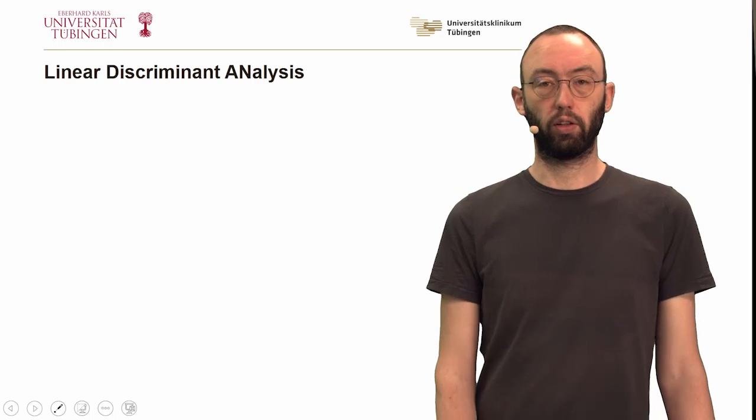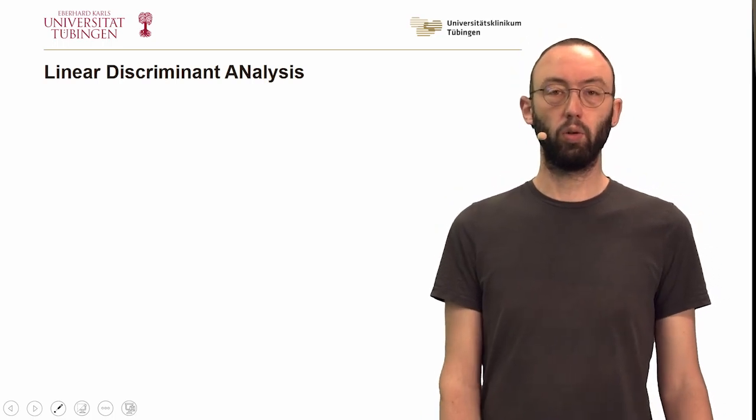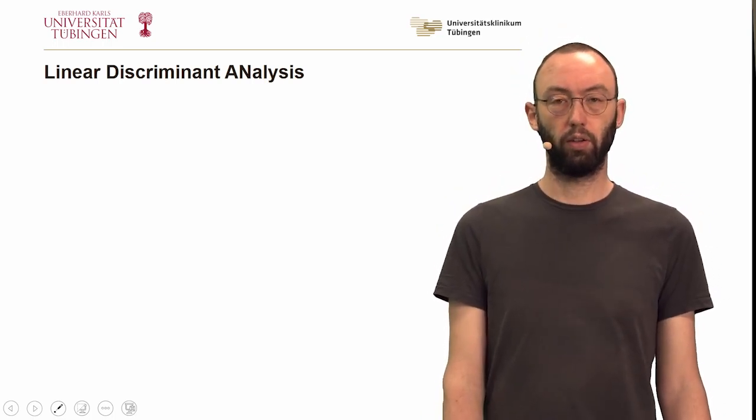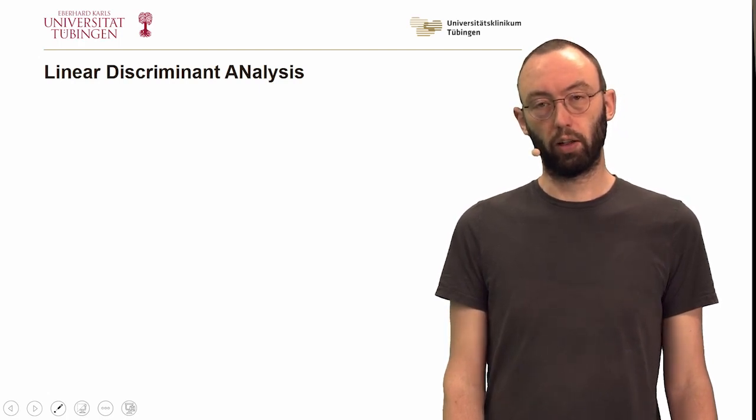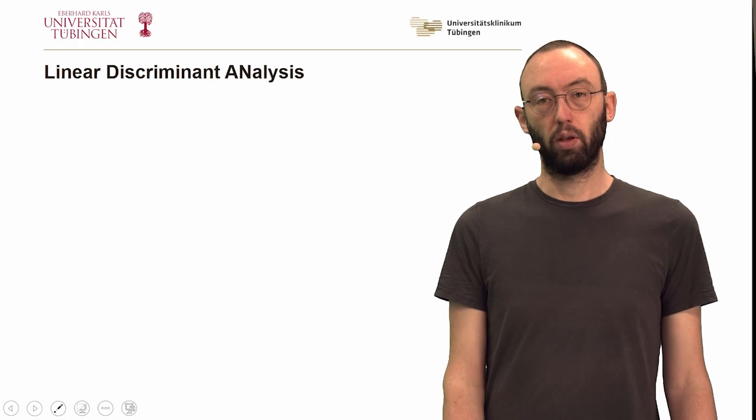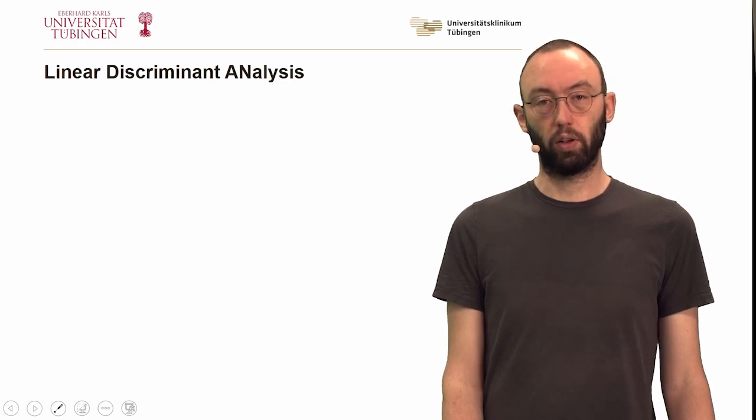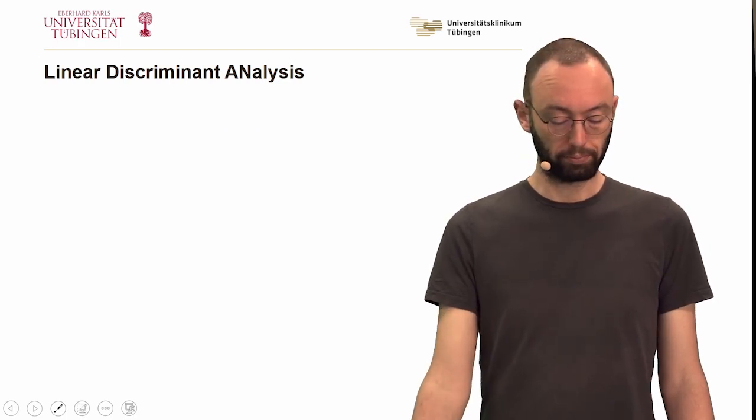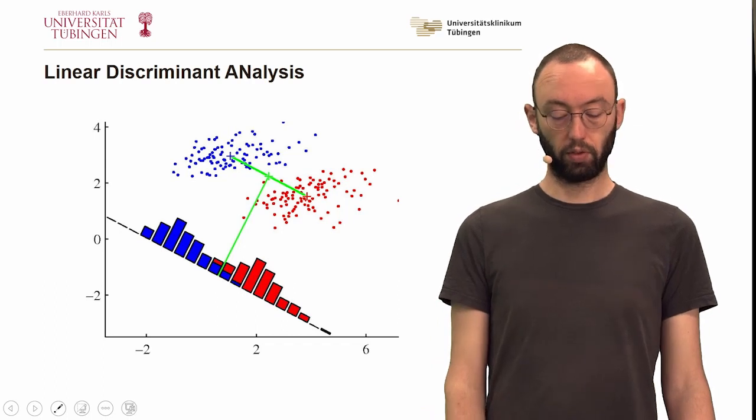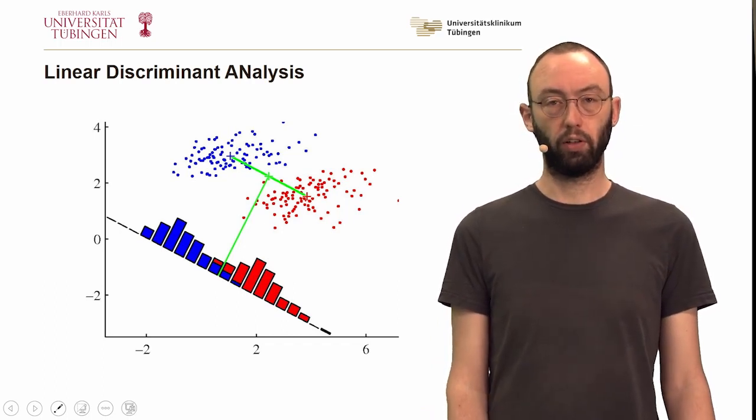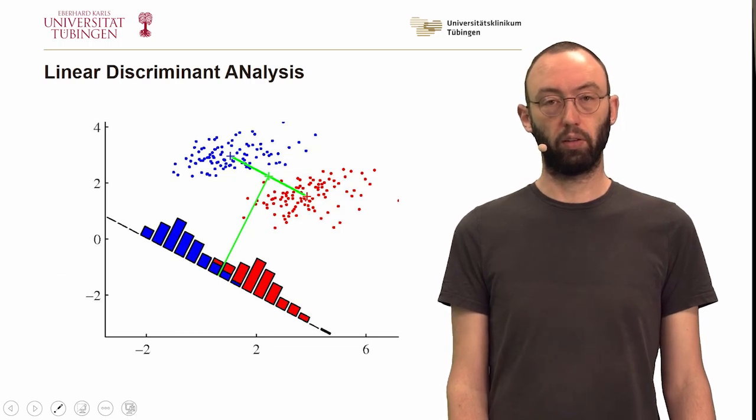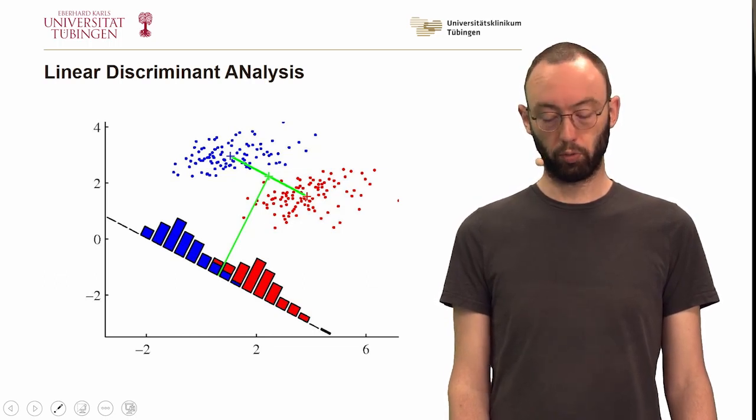We will use a technique called linear discriminant analysis. I will go over the details of this very fast, but if you need a refresher, you can watch our Machine Learning 1 lecture from the winter term, which I will link to this video. Linear discriminant analysis gives you a handle to compute the optimal direction in a high dimensional space that separates two groups of points.